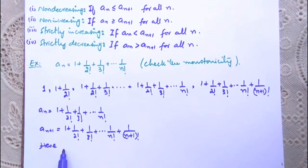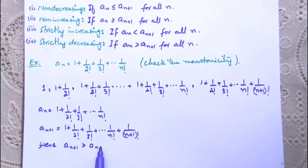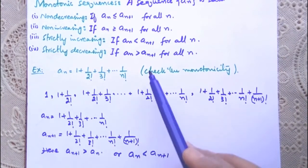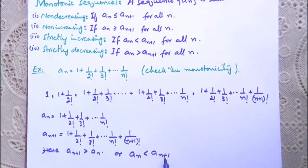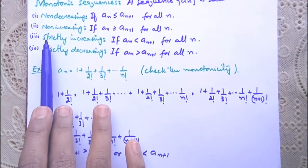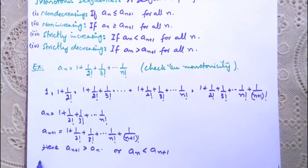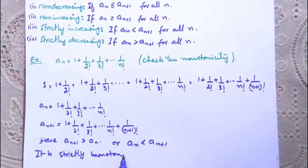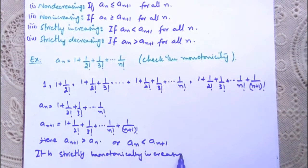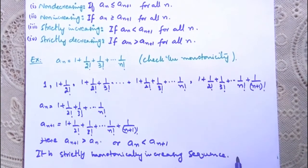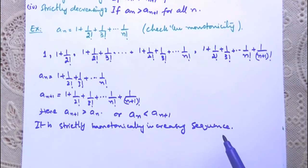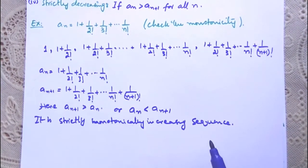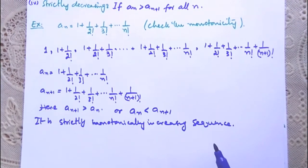Since a_{n+1} has all the terms of a_n plus the additional term 1/(n+1)!, we can conclude that a_{n+1} is greater than a_n, or equivalently a_n < a_{n+1}. So the sequence is strictly increasing — it is a strictly monotonically increasing sequence. To check monotonicity, replace n with n+1 to find the (n+1)th term, then compare the nth and (n+1)th terms.